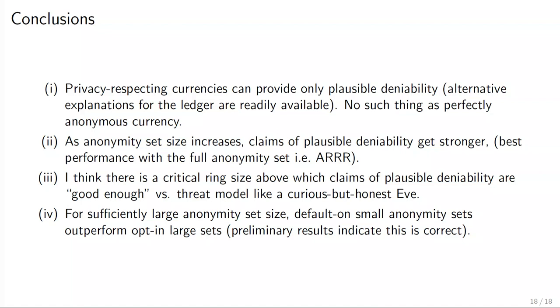In conclusion: every privacy-respecting currency is at 1 out of 10; every other cryptocurrency is at 0 out of 10. Privacy-respecting currencies can only provide plausible deniability — there's no such thing as a perfectly anonymous currency. If the feds are physically tracking you, it doesn't matter that you're using Zcash. As anonymity set size increases, claims of plausible deniability get stronger, but we should probably stop at some level we consider good enough. For a sufficiently large anonymity set, small anonymity sets that are default-on with no transparent pool may actually outperform larger sets burdened by transparent pools — but these are preliminary results and I'm still working on simulations.